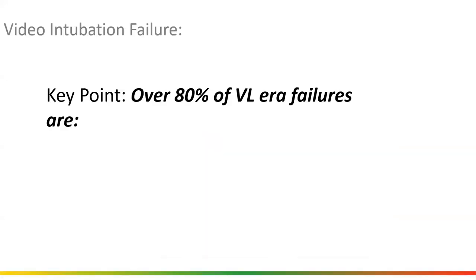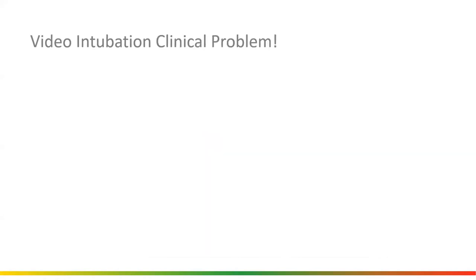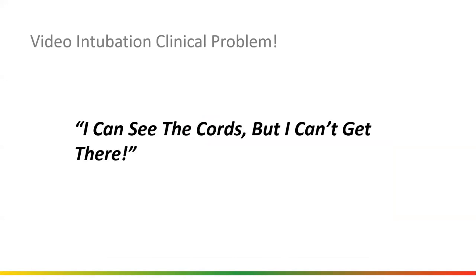80% of the time now in the VL era, when we fail to intubate somebody with the video laryngoscope, it's a failure of tracheal access, and it's most often due to the lack of dynamic navigation. Video intubation clinical problem — what does this look like on the street, and how do people express this? 'I can see the cords, but I can't get there.'